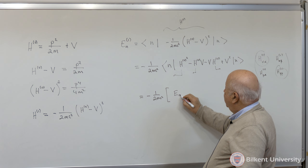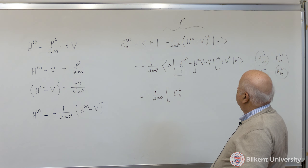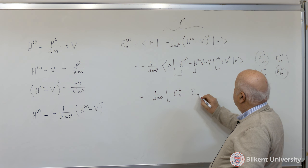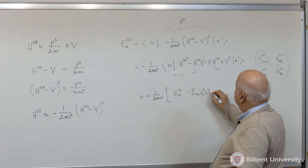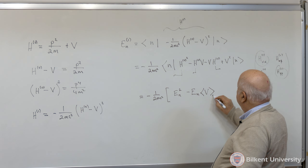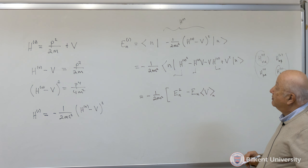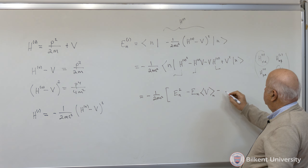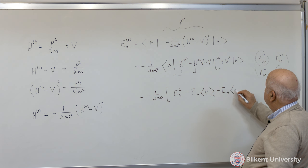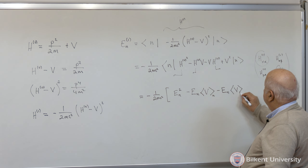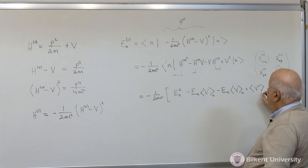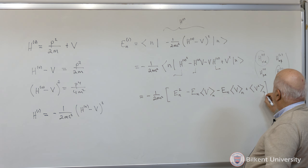These terms are easy. H0 operating on its eigenstate gives me just the energy eigenvalue. H0 operating on n towards the right gives me the energy eigenstate. So let's just write them down: the first term H0 squared gives me En squared. This next one gives me minus En times the expectation value of V in the nth state. This one gives exactly the same thing because En is a constant, so we can take it to the left.